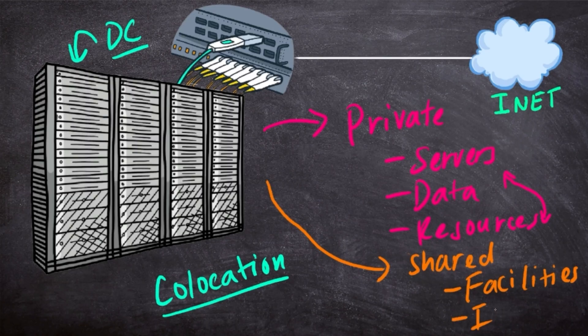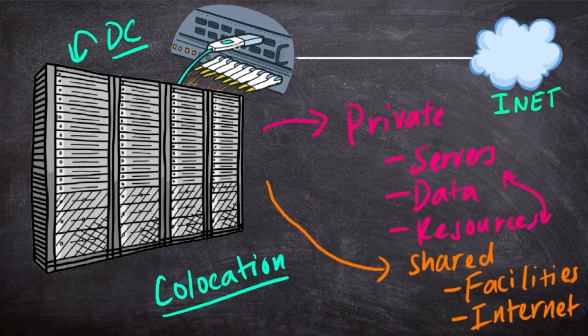And then we also have things like the internet link. So as you can see above here, we have this one common internet connection for the entire facility, and we have some routers, some switches that everyone shares and everyone plugs into.